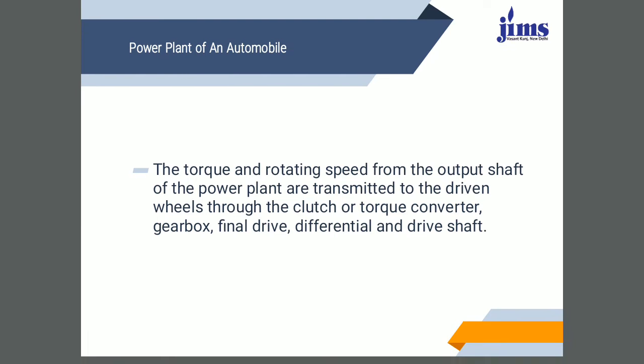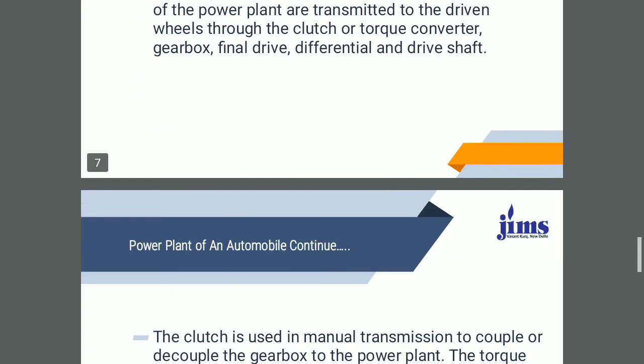Let's come to the first thing — that is the power plant of an automobile. The torque and the rotating speed from the output shaft of the power plant are transmitted to the driven wheels through the clutch or the torque converter, gearbox, final drive differential, and the drive shafts.